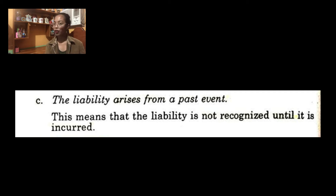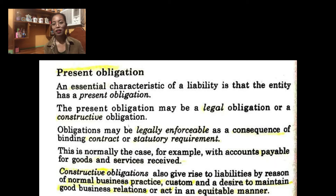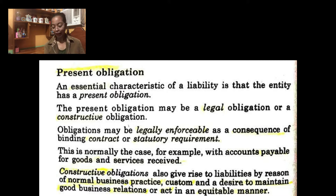A present obligation is an essential characteristic of a liability. It can be a legal obligation or a constructive one. When it is legal or legally enforceable, it may arise because you signed a contract, incurring a debt, or it may be a court requirement — for example, you lost a case and are required to pay. Normally, accounts payable and goods and services received are legal obligations. If goods were delivered to you, you cannot refuse to pay — it is your obligation.